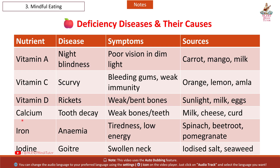Next nutrient: Calcium. Disease: Tooth Decay. Symptoms: weak bones and teeth. Sources: milk, cheese, curd.